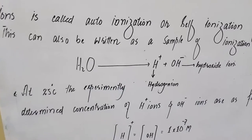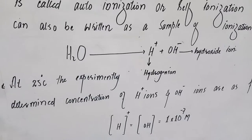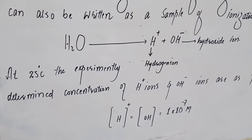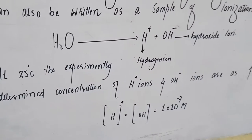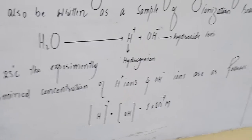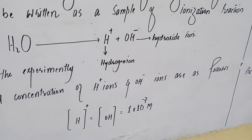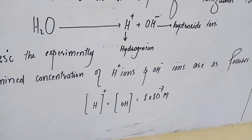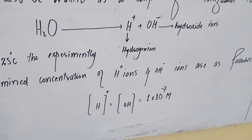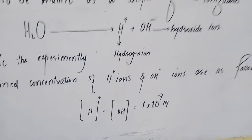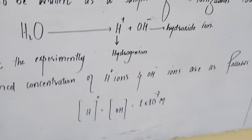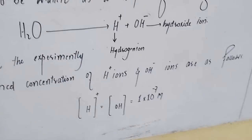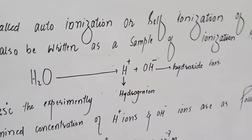At 25°C, experimentally it is determined that the concentration of hydrogen ions and hydroxyl ions are equal: concentration of H⁺ equals concentration of OH⁻ equals 1 × 10⁻⁷ molar.